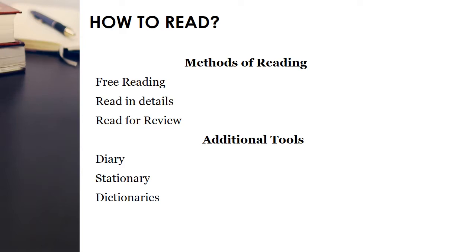This exercise is done in order to make our brain informed so it can calculate the amount of energy we are going to use while performing this task. Then we move forward to the next point: reading in details. Reading in details means you must be equipped with a few tools. You must have a few dictionaries, and when you are going through the text you have to underline the most difficult words, unique words, and even the most beautiful lines.